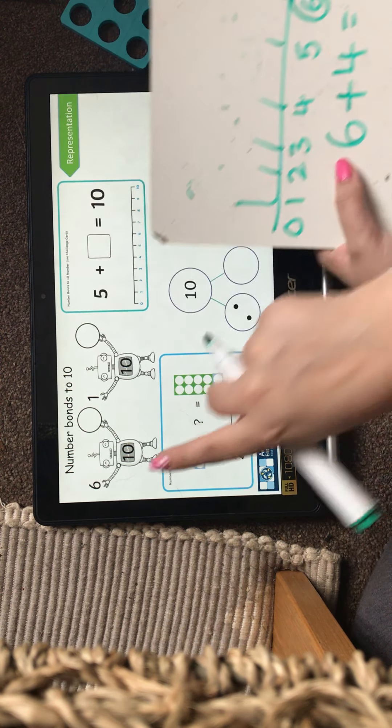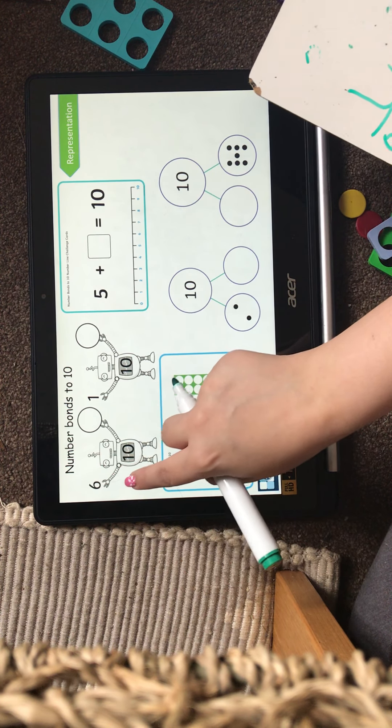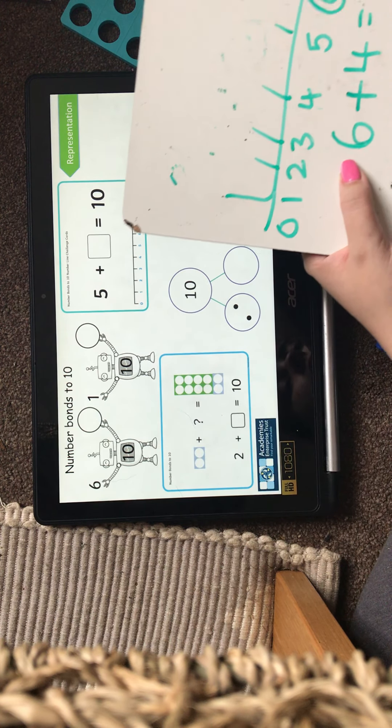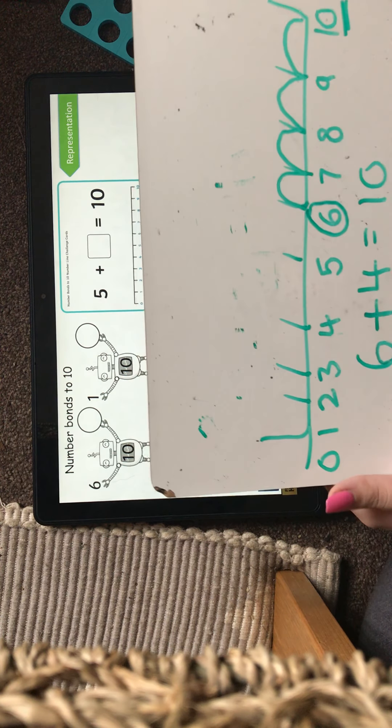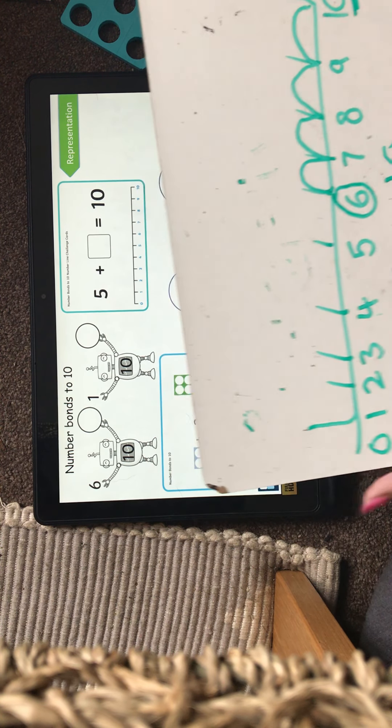So my answer would be 6 add 4 equals 10. So 6 is my starting number. So in this one I've been given it. Then I've got to work out how many I need to reach that 10. So I've counted using a number line. Or you can use 10 frames, or you can have a go using Numicon.